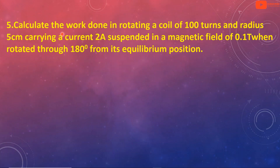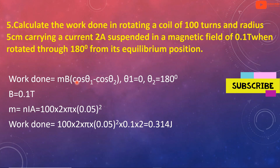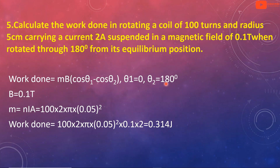Fifth question: calculate the work done in rotating a coil of 100 turns and radius 5 cm carrying a current of 2 ampere suspended in a magnetic field of 0.1 tesla when rotated through 180 degrees from its equilibrium position. Number of turns is 100, radius is 5 cm, current is 2 ampere, and the rotation is from equilibrium through 180 degrees.